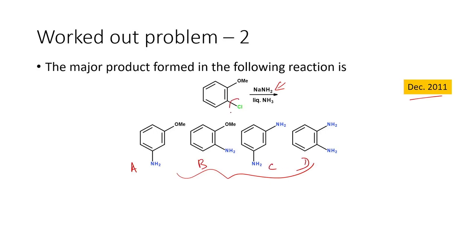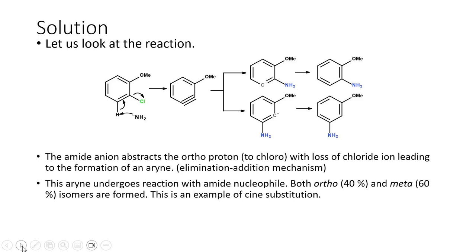In option A, the chlorine is replaced and the methoxy is also replaced. In option B, only the chlorine is replaced by the amide unit. In option C, both the OMe group and the chloro group are replaced with amino NH2 group, but the positions are different. In option D, both OMe and chloro are replaced by the NH2 group. We have to find out what is the correct product formed in this reaction.